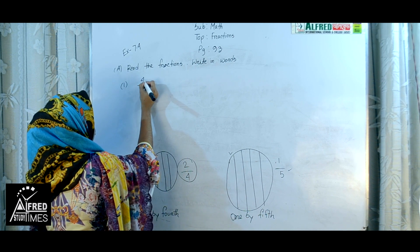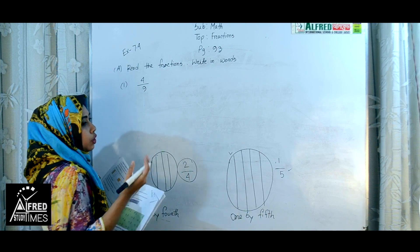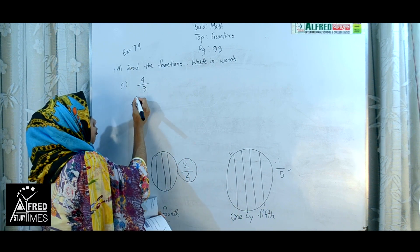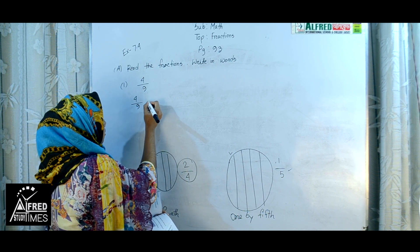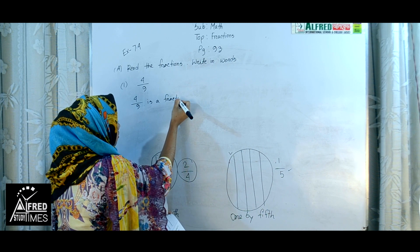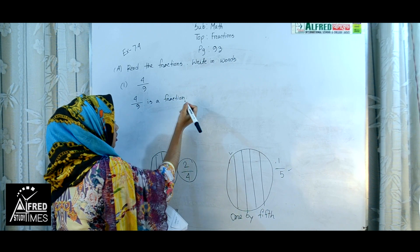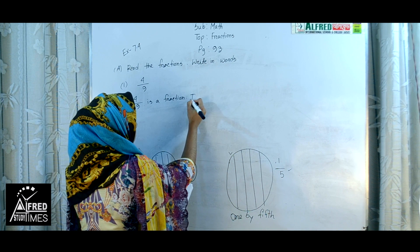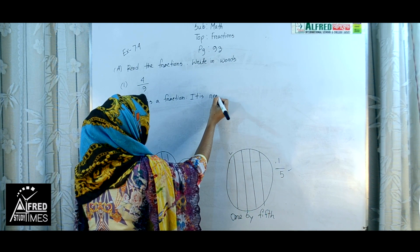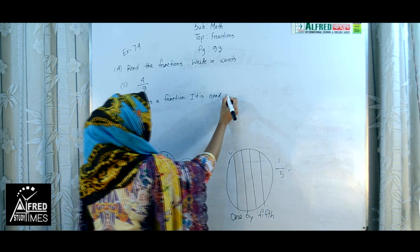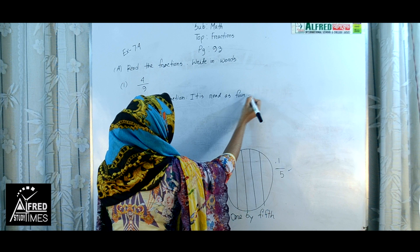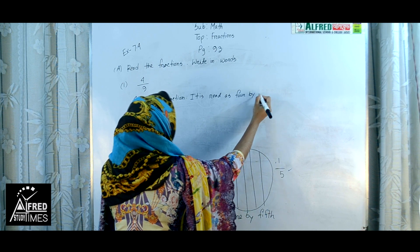Number 1: 4 by 9. We know it's a fraction. So we write here: 4 by 9 is a fraction. It is read as 4 by 9.